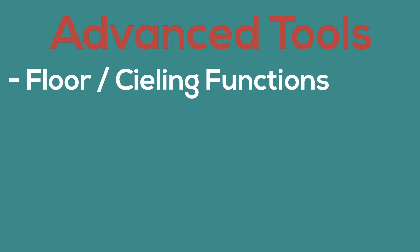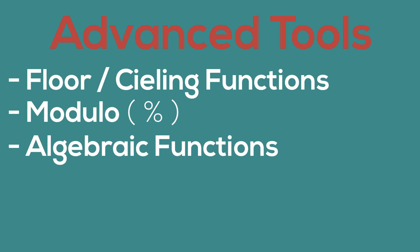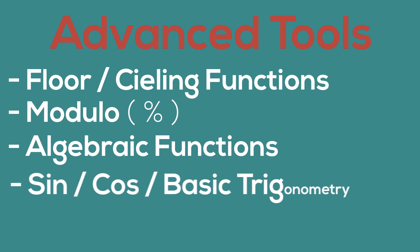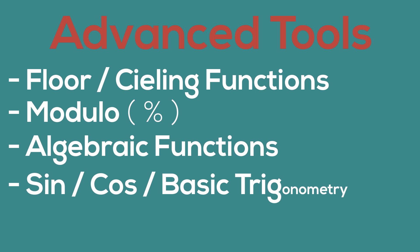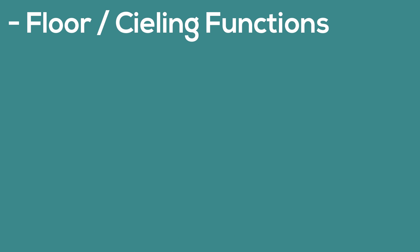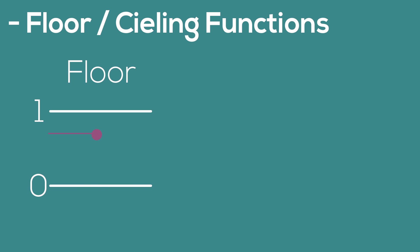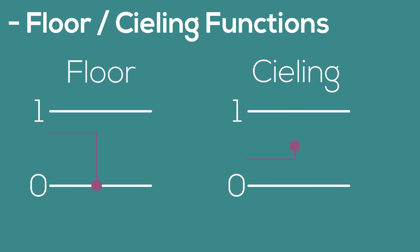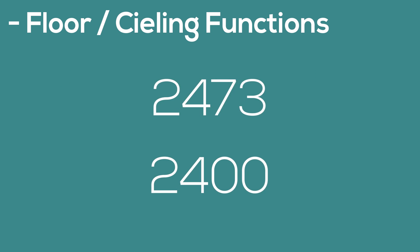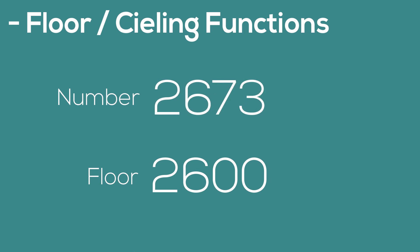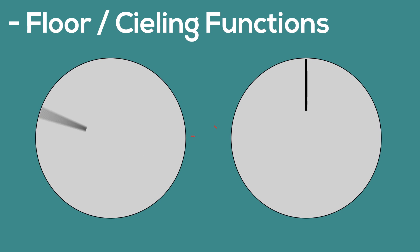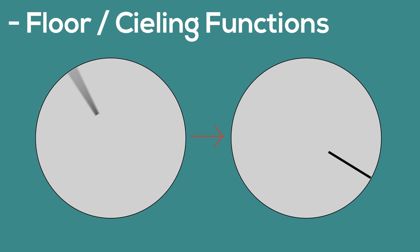Some of the tools we're going to cover are floor and ceiling functions, modulo, algebraic functions, as well as sine, cosine, and basic trig. The floor and ceiling functions are pretty simple — they're basically rounding without the rounding. Floor will drop a decimal number to the nearest whole number, while ceiling will raise it to the nearest whole number. These functions are good for breaking up a constantly changing number into segments, sort of like how a clock's constantly spinning motor gets split into individual seconds.